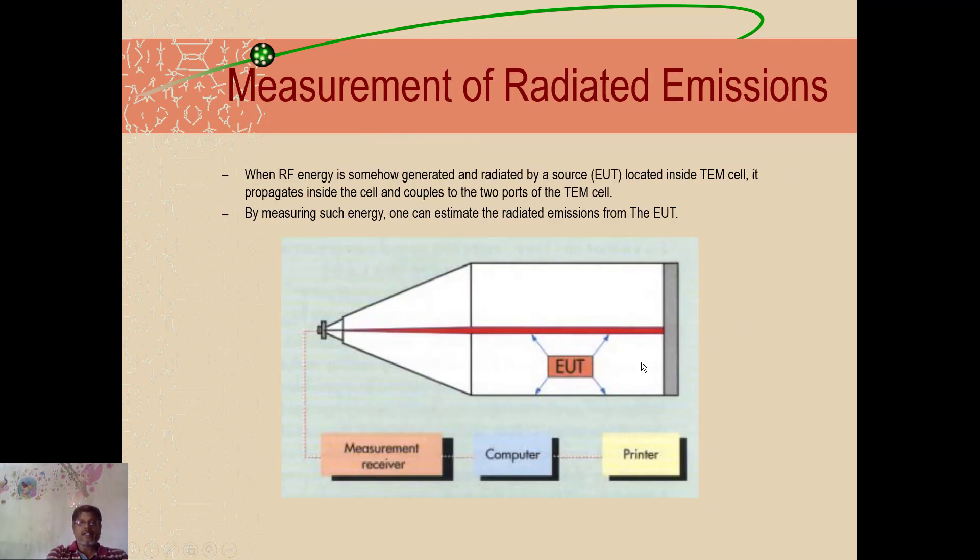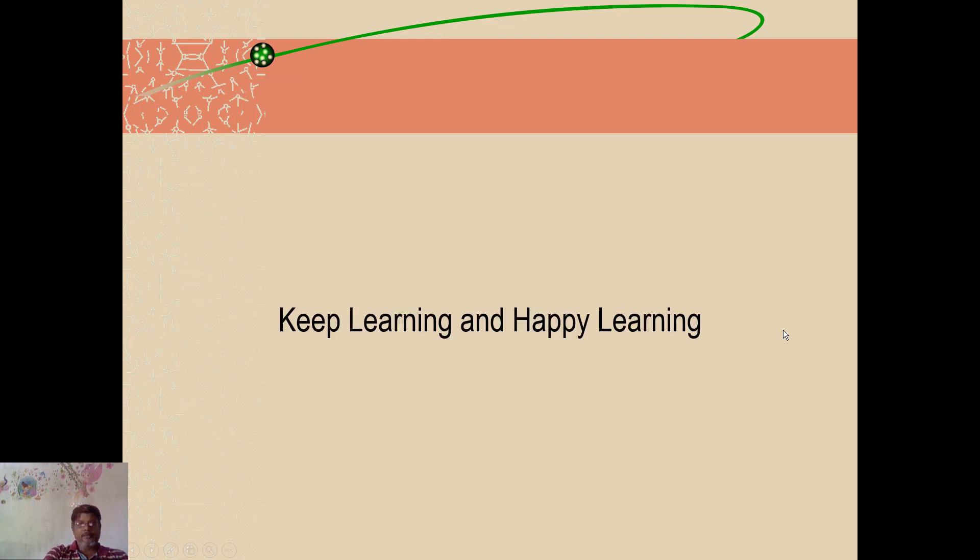Next one is the RE test. RE test also, same way we perform. What we do, the equipment which is there will be emitting. The emitter will be observed by the receivers, measuring receivers given to computer and printed. So very simple test, RE testers. RF energy is somehow generated and radiated by the source located inside the TEM cell. That is propagated inside the cell and couples to the two ports of the EM cells. By measuring such energy, one can estimate how much has been radiated by the equipment. Inside the cell, we just keep it. Like open area test, we would have performed.